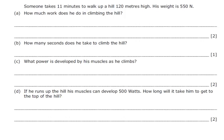Someone takes 11 minutes to walk up a hill 120 meters high. He's got a weight of 550 Newtons. How much work does he do in climbing up the hill? Well again work done is equal to force times by distance. The force on him is 550 Newtons. It goes up a distance of 120.